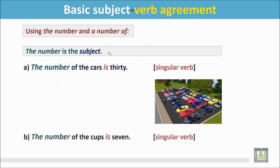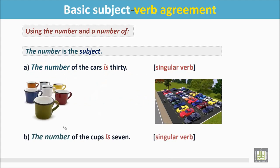Number B: The number of the cups is 7. The subject is 'the number.' It is a singular subject, so the verb is singular.